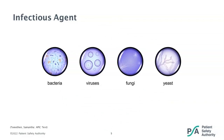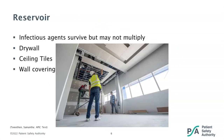Which pathogens to be most concerned with will depend on your construction and renovation project. The next link is the reservoir — this is where the infectious agent can survive, but may or may not multiply. Commonly, we think of reservoirs as humans, animals, or the environment. During construction, we are most concerned with the environment. Examples of this would be drywall, ceiling tiles, and wall covering. During demolition, a lot of dust can be stirred up and organisms being harbored underneath or in debris can be circulated.